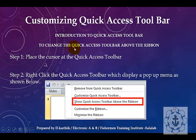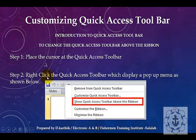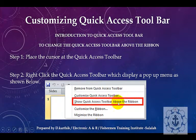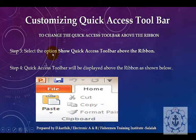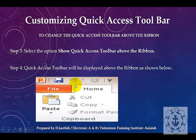To change the Quick Access Toolbar below the ribbon, as we discussed: place the cursor on the Quick Access Toolbar, right-click to display a pop-up menu, then select the option 'Show Quick Access Toolbar Above the Ribbon.' The Quick Access Toolbar will then be displayed above the ribbon, restored back to its original position.